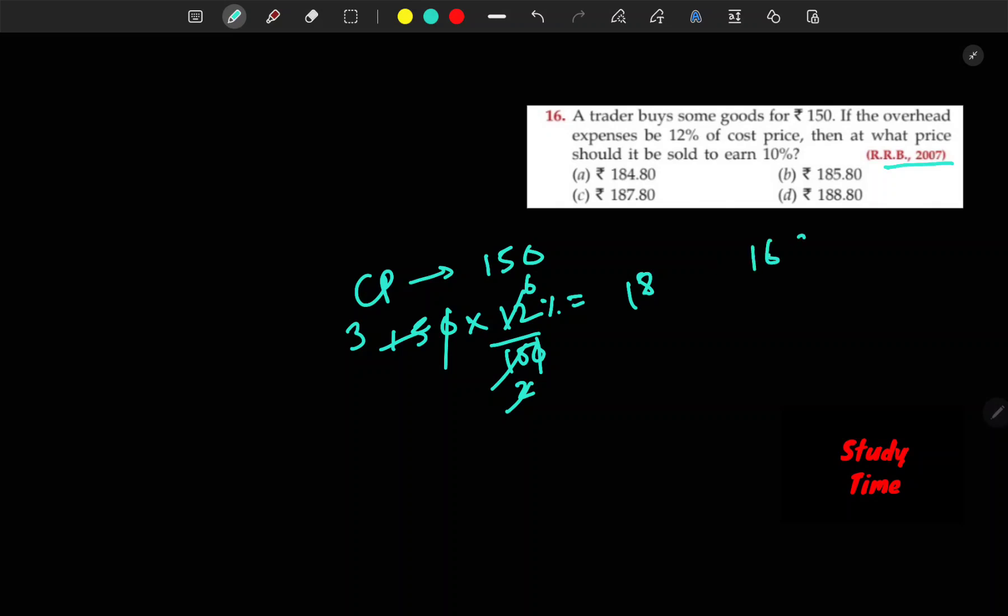Plus 150 equals to 168. Then at what price should it be sold to earn 10% profit? Selling price, that's 168 into 10 upon 100. 100 cancel, 16.8. 16.8 profit. And profit, then SP will be 168.0... 184.8.